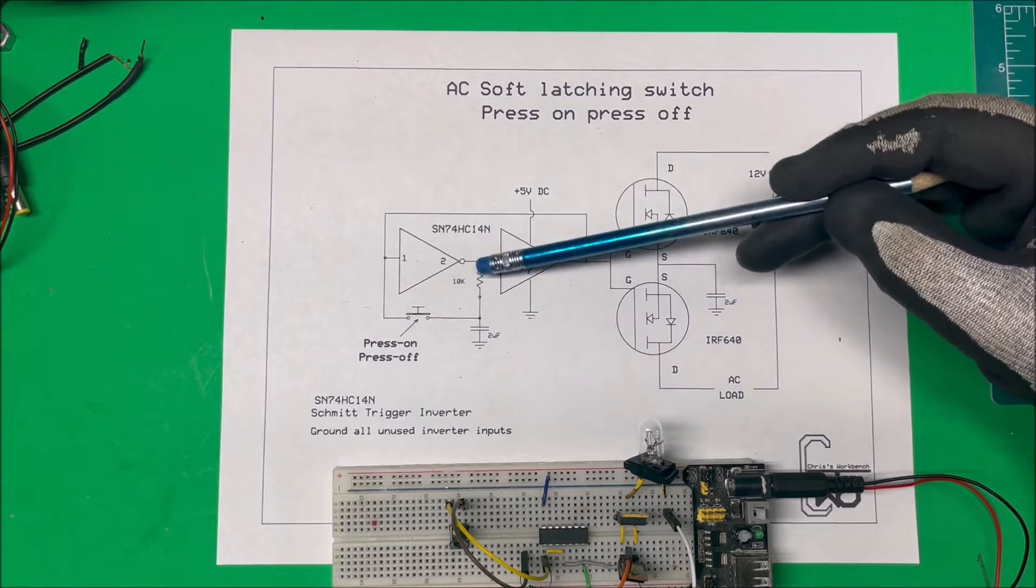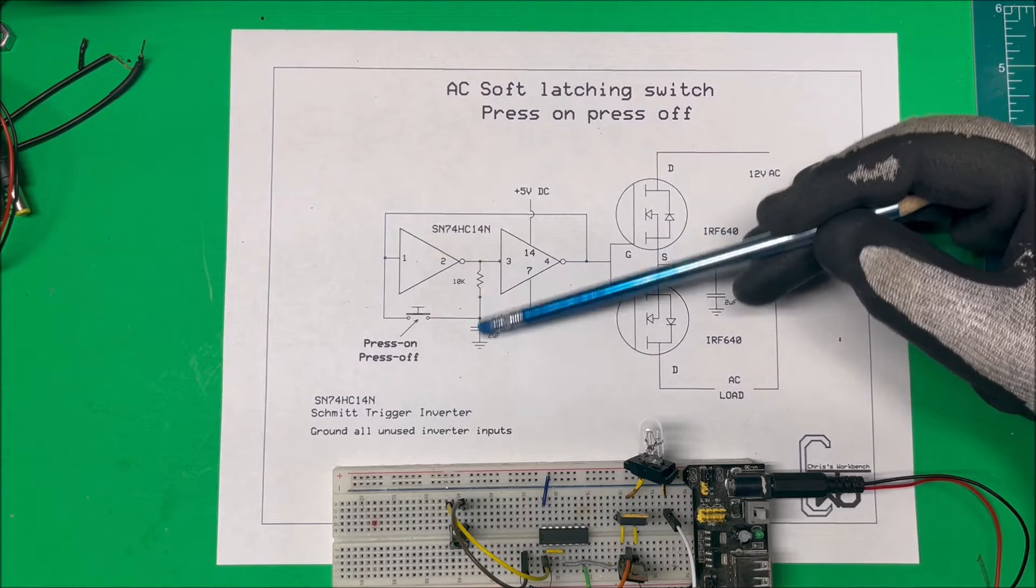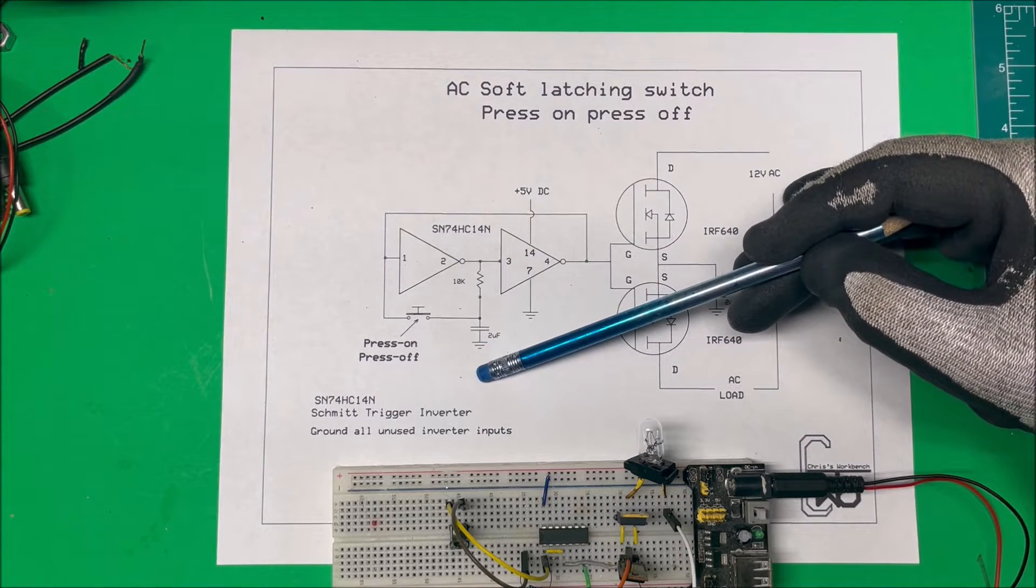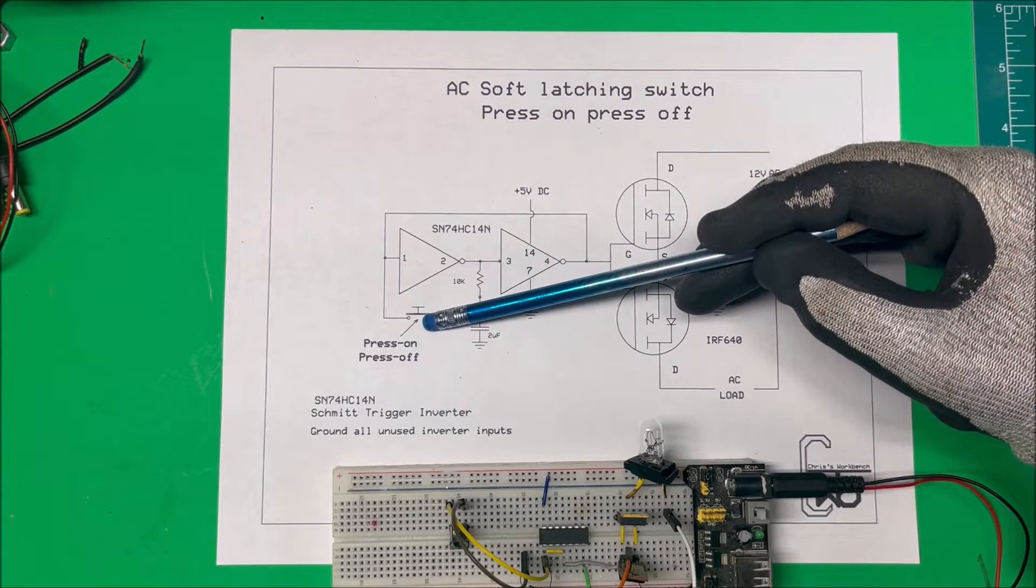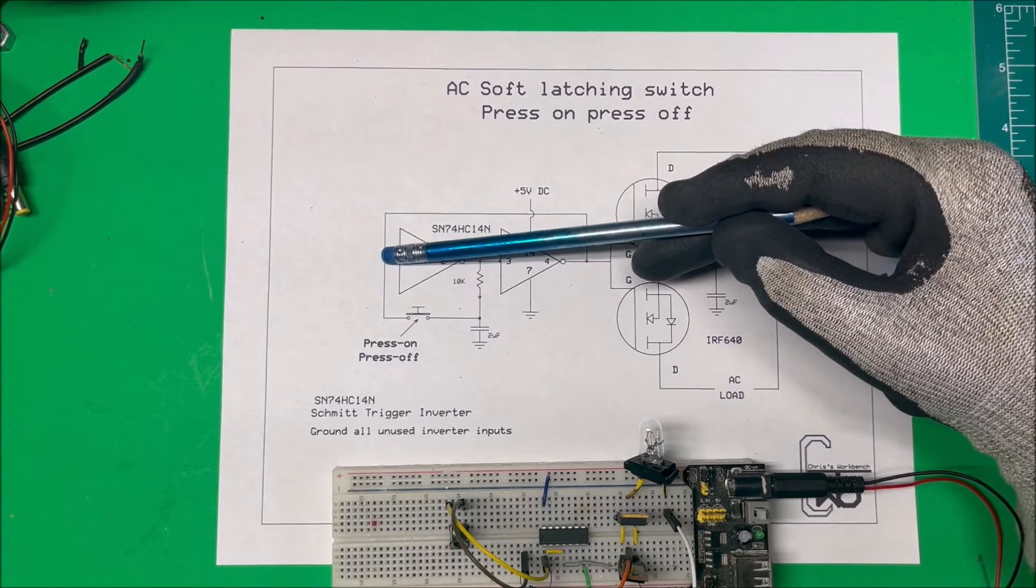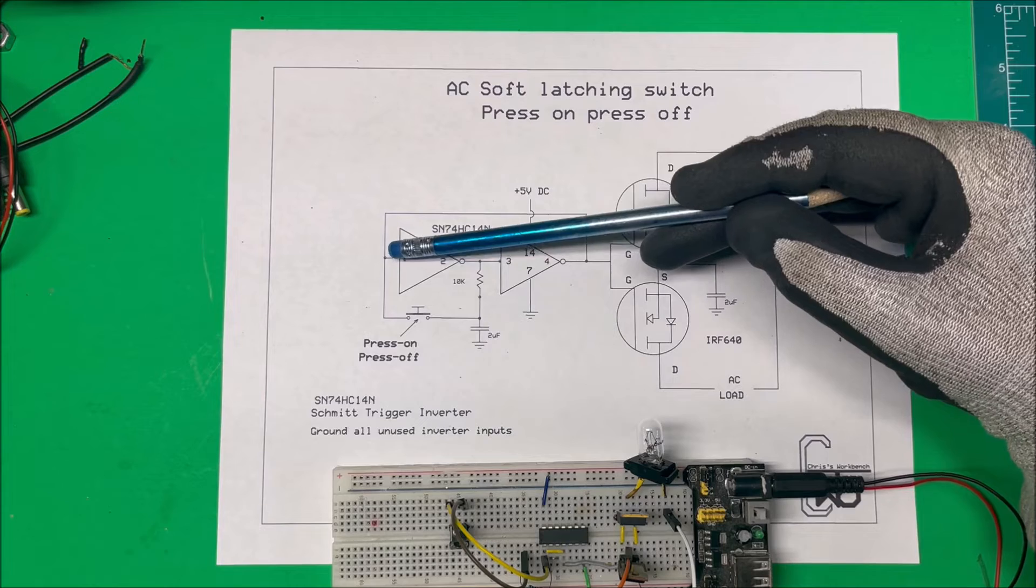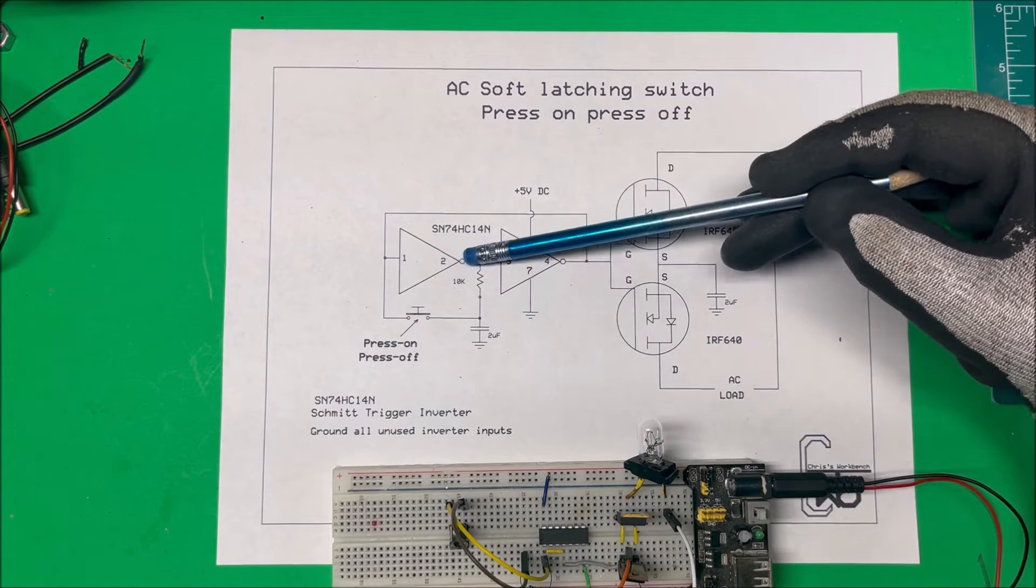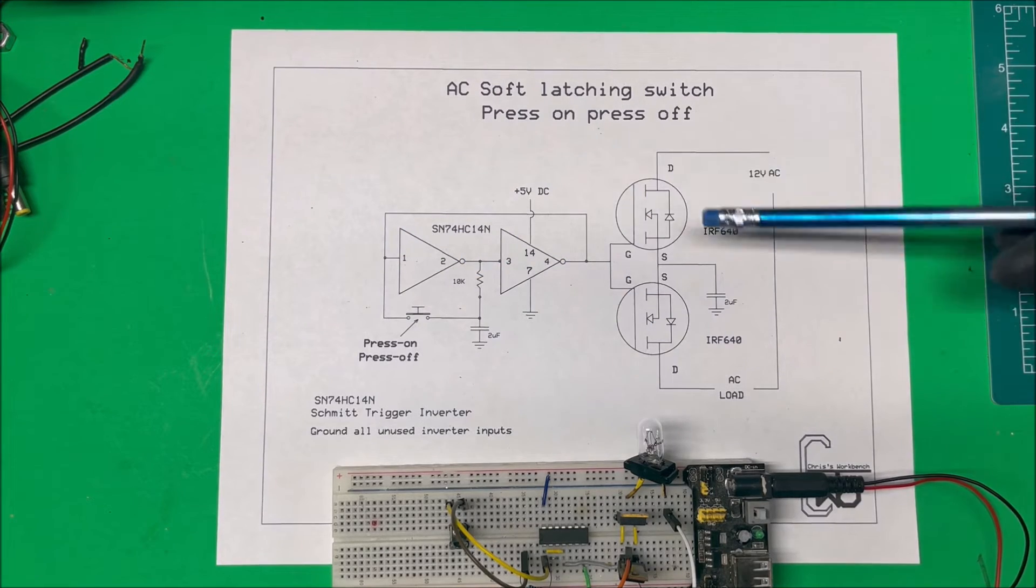If this is zero this capacitor is discharged through to ground here. So when I press the button back down it's going to take this five volts here and bring it to ground, make it low. So there's going to be zero, five here, five and zero here, and then these are going to switch off.